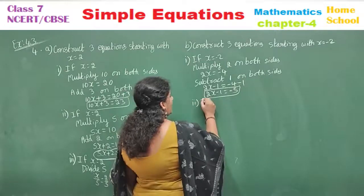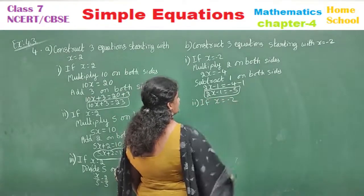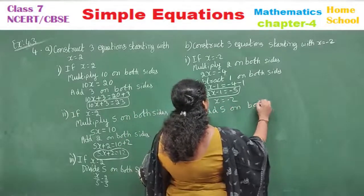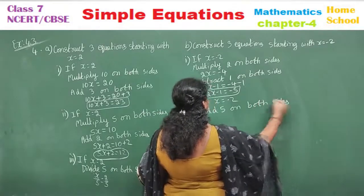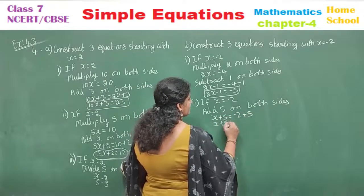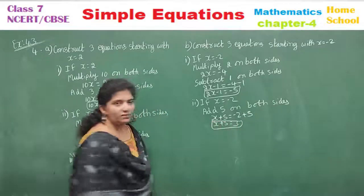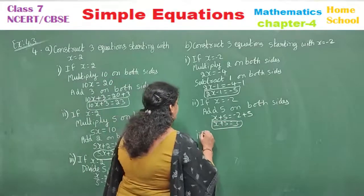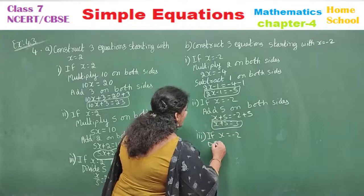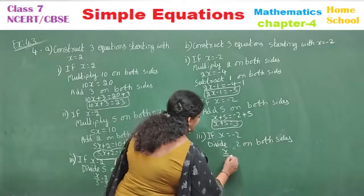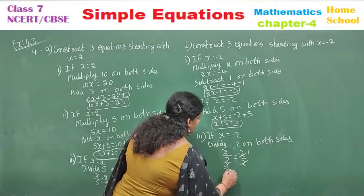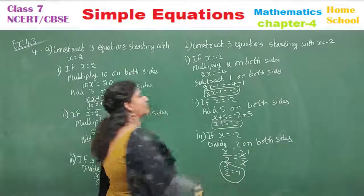Second equation: if x equals minus 2, add 5 on both sides. x plus 5 equals minus 2 plus 5, so x plus 5 equals 3. Third equation: divide both sides by 2. x by 2 equals minus 2 by 2, which gives x by 2 equals minus 1. This is the way you can frame and solve equations.